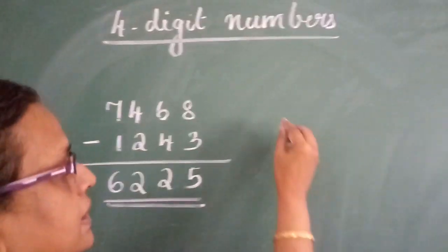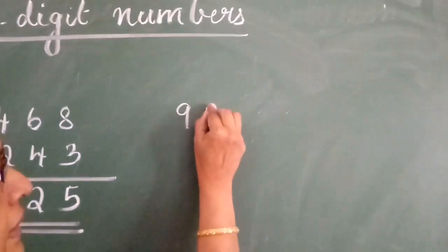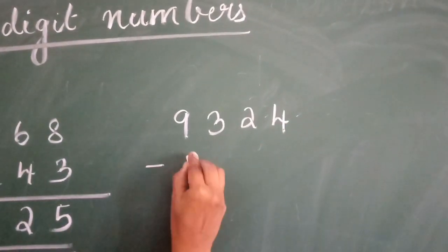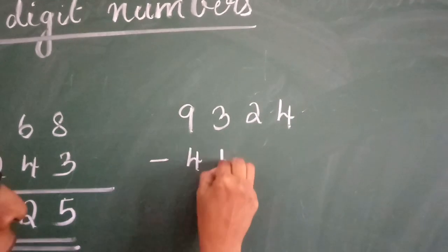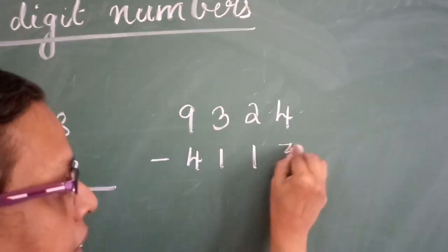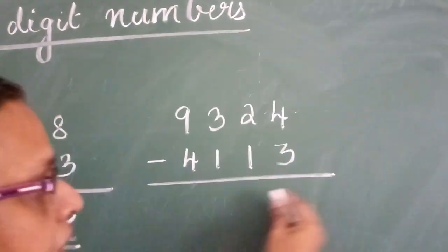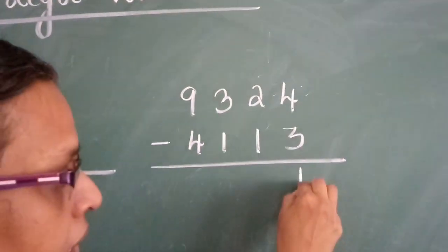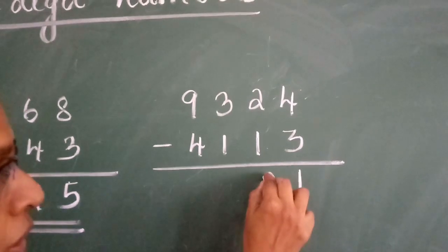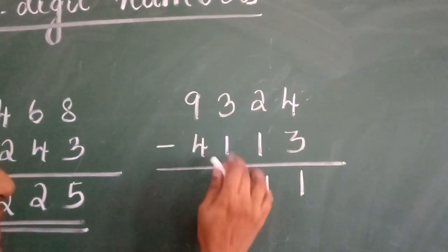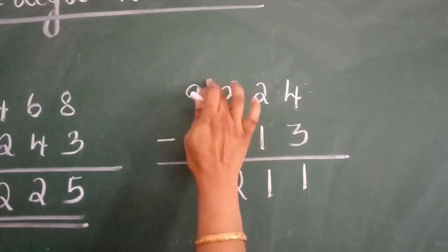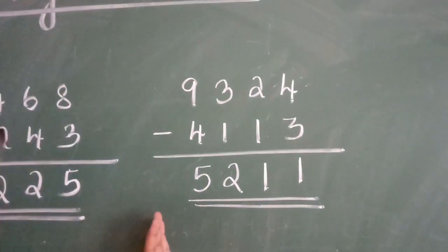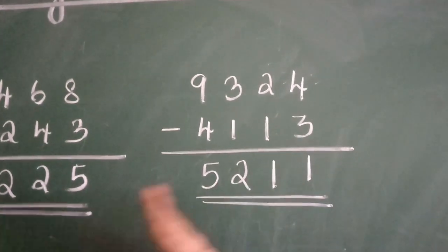One more question: 9,324 minus 4,113. How do you subtract? Again, it is worked from the right side. 4 minus 3 equals 1. 2 minus 1 equals 1. 3 minus 1 equals 2. 9 minus 4 equals 5. So, the answer is 5,211.